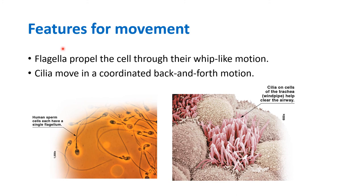Some features that help cells with movement are flagella and cilia. An example of a human cell with a flagellum is the sperm cell — sperm cells have flagella attached to them that help them swim and move. Cilia are small hair-like structures that sway back and forth to create movement. Our trachea, part of the respiratory tract, has cilia lining its surface so that when they sway back and forth, they can move away dust or particles before they reach your lungs.